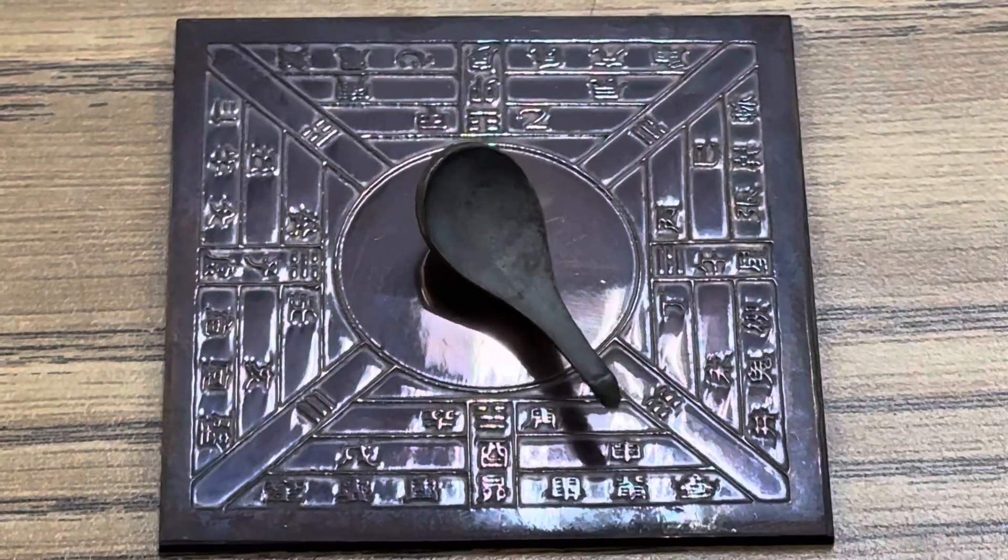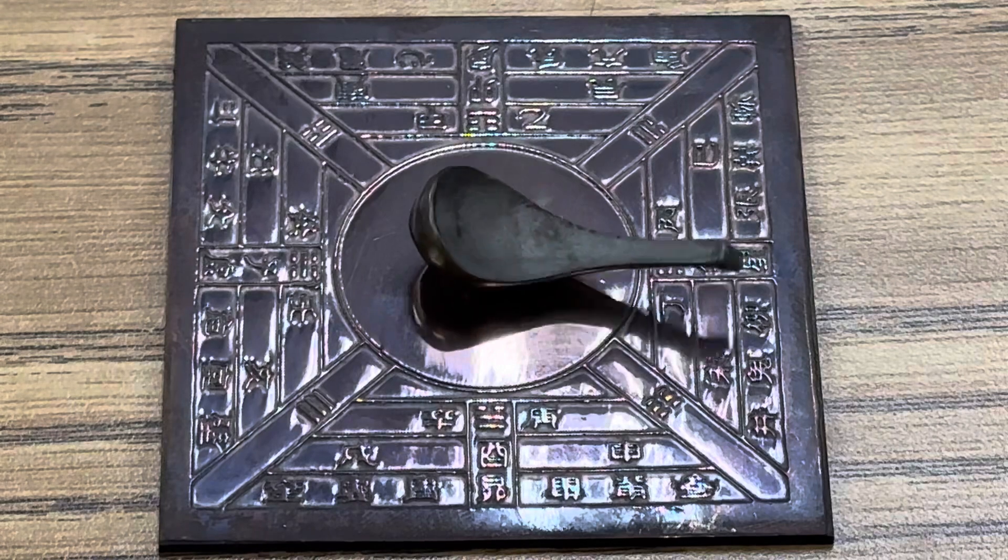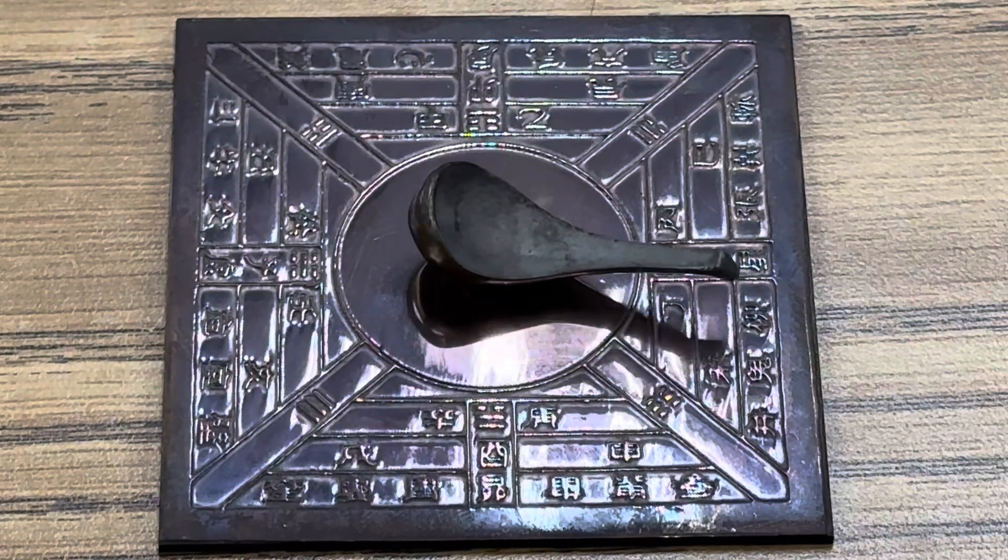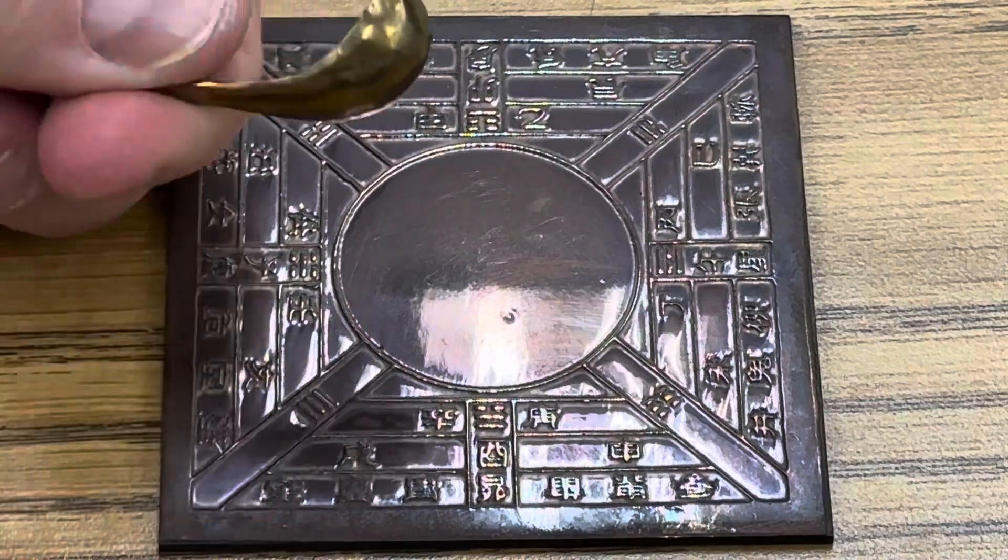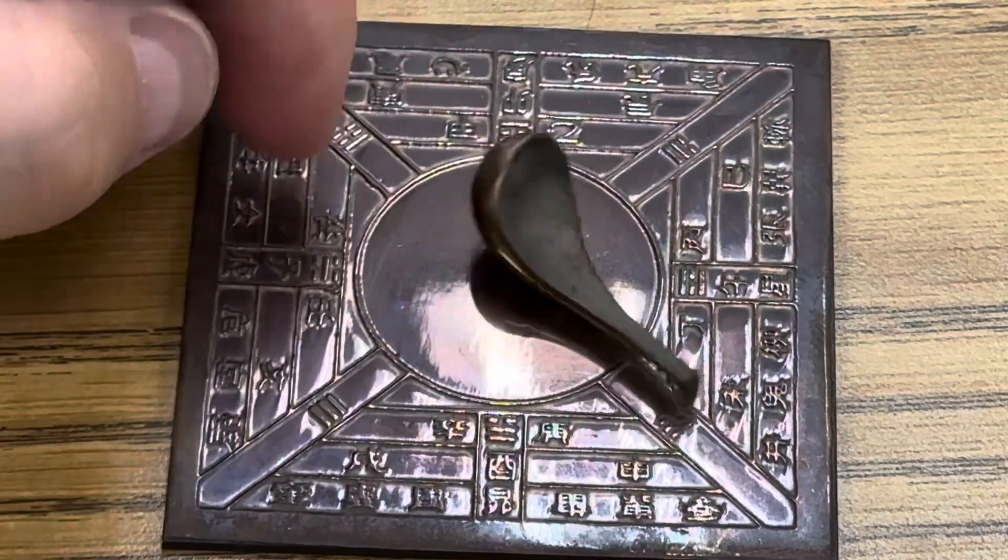Let me show you its features. Known as the Sinan, this early compass made by the Chinese during the Han Dynasty has a ladle that's made out of lodestone, and when you spin it, it points south.